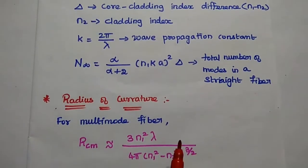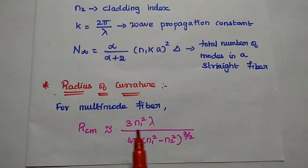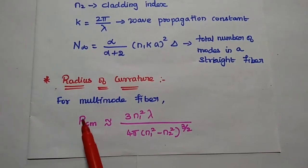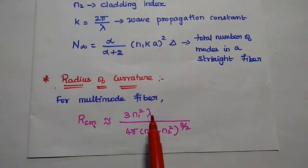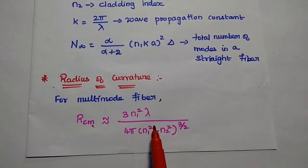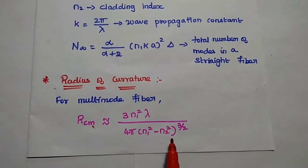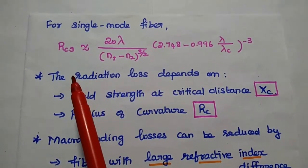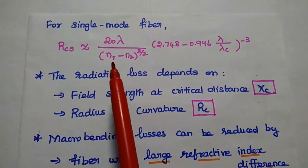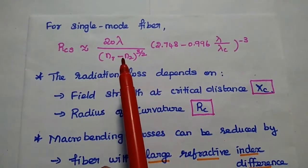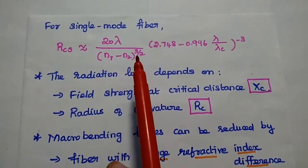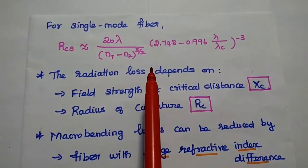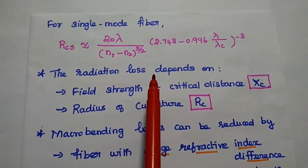Next, we are going to find out the radius of curvature for multi-mode fiber. It can be denoted as RC that is the radius of curvature for multi-mode M is equal to 3N1 squared lambda divided by 4 pi into N1 squared minus N2 squared the whole power 3 by 2. Similarly, we can find out the radius of curvature for single-mode fiber that is approximately equal to 20 lambda by N1 minus N2 the whole power 3 by 2, 2.748 minus 0.996 lambda by lambda C the whole power minus 3.